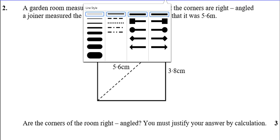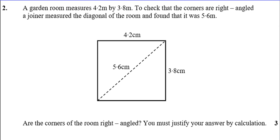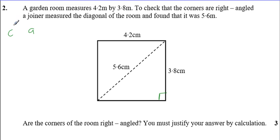Question two. A garden room measures 4.2 by 3.8. To check the corners are right angles, the joiner measures the diagonal of the room and finds it's 5.6. Are the corners of the room right angles? You must justify your answer with a calculation. There are two different ways of doing this: you can either use the converse of Pythagoras, or you can use the cosine rule to find that angle and check whether it's 90 degrees. I'm going to use the converse of Pythagoras.